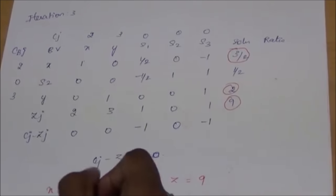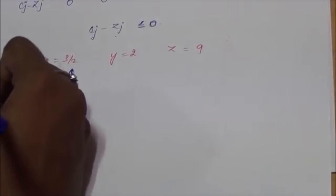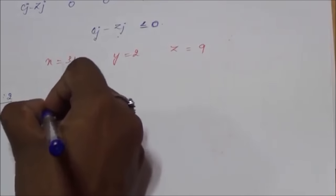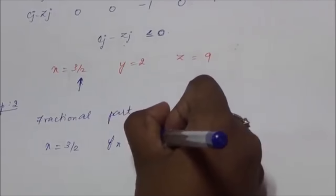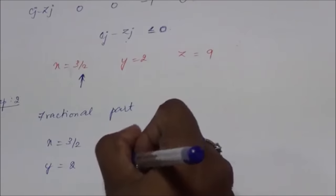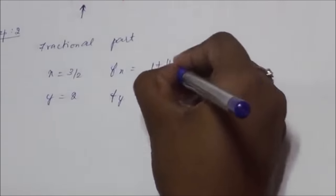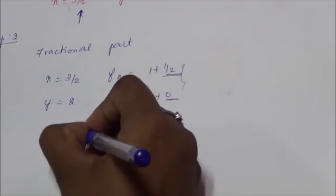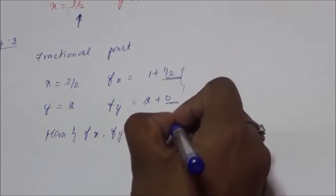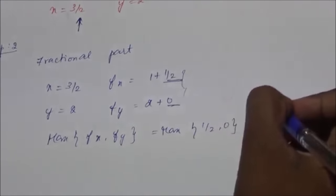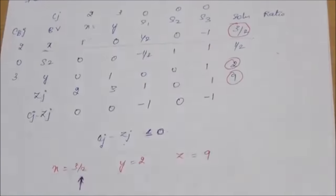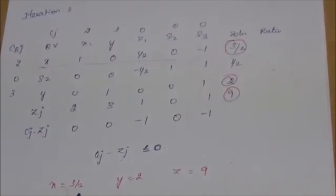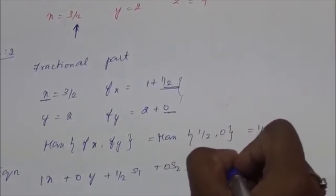Since we find a fractional value, and we need only integer values, we apply Gomory's cut method as the second step. We find the fractional parts of all variables: x = 3/2 = 1 + 1/2, so its fractional part is 1/2; y = 2 = 2 + 0, fractional part is 0. The maximum of these fractional values is 1/2, obtained from variable x. So we take the x row to find the corresponding equation: 1x + 0y + (1/2)s1 + 0s2 − s3 = 3/2.